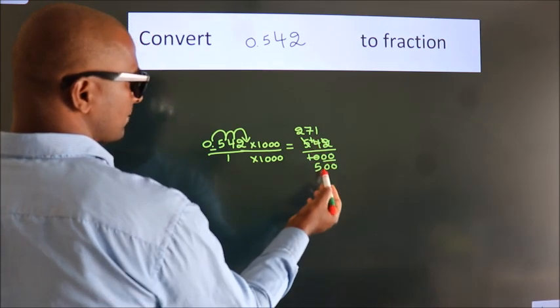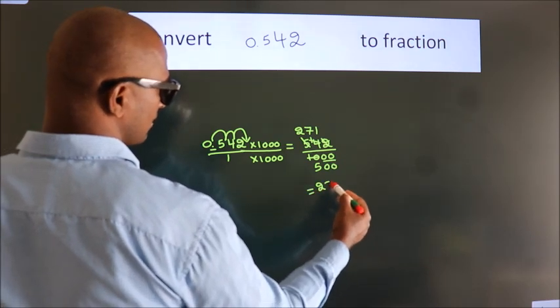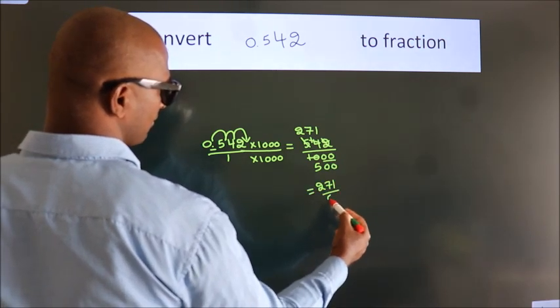Further cannot be simplified. So, our fraction is 271 by 500.